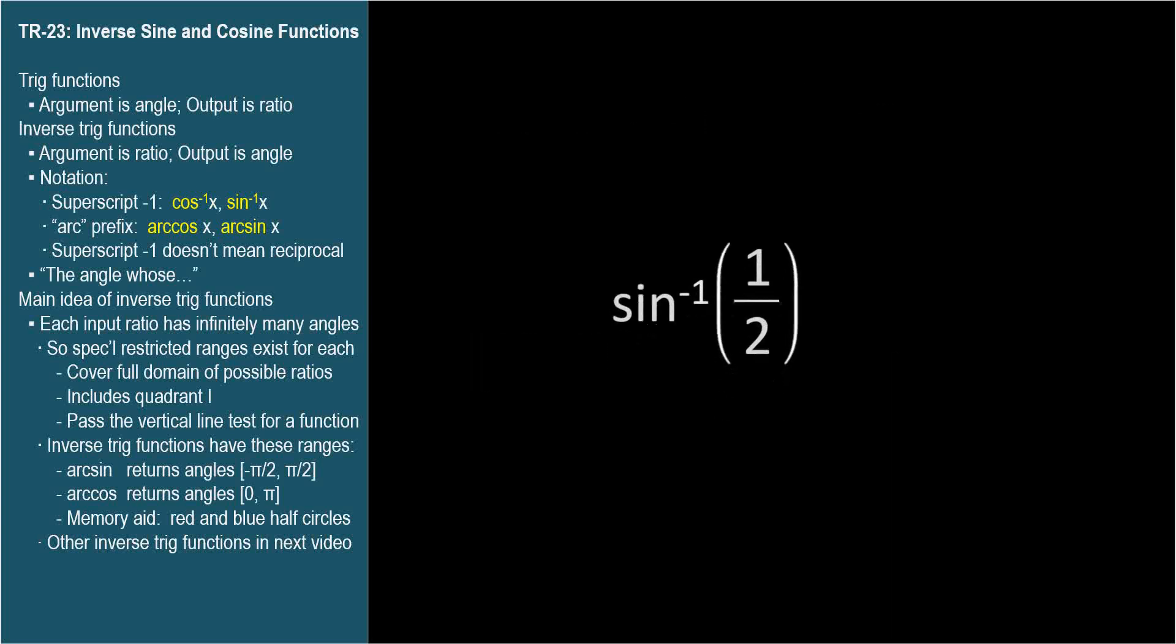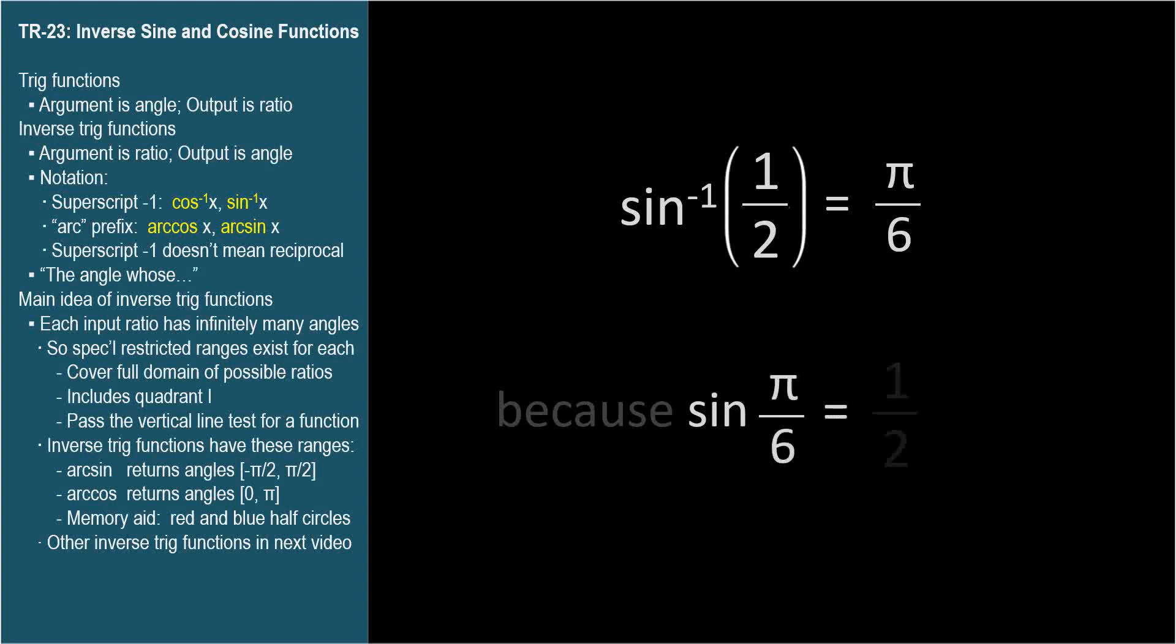Let's do an easy example. The inverse sine of 1 half is pi over 6 radians because the sine of pi over 6 radians is 1 half.